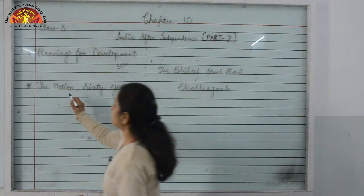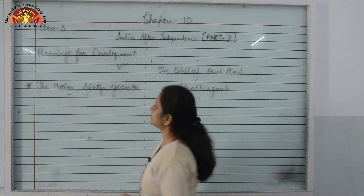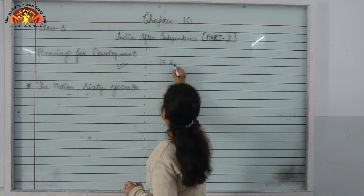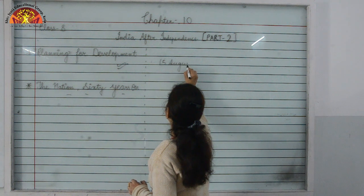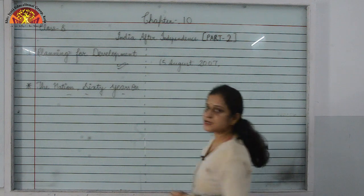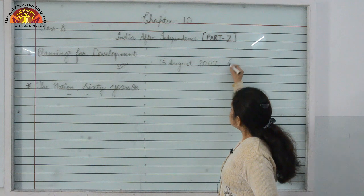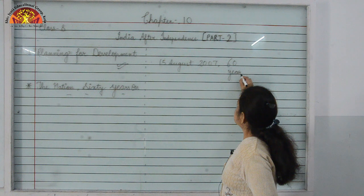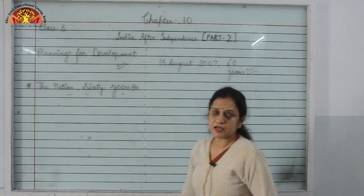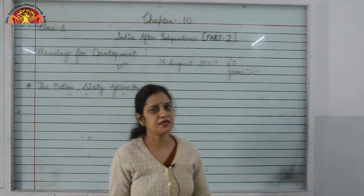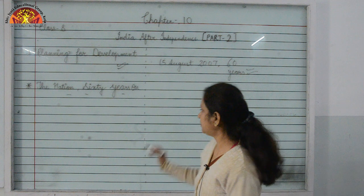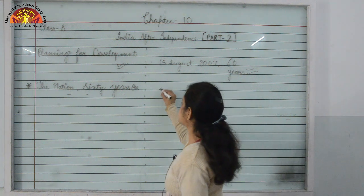We are now going to cover the last topic of this chapter: The Nation 60 Years On. On 15th August 2007, India celebrated 60 years of its existence after independence. At that time, we had faced many achievements as well as failures. We will discuss them respectively, starting with the successes.